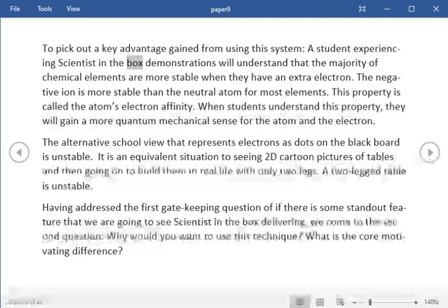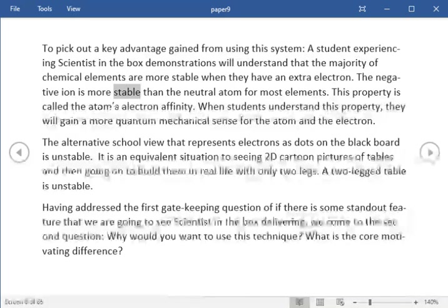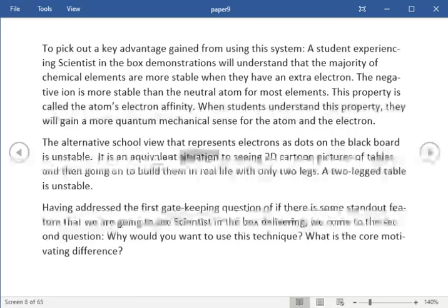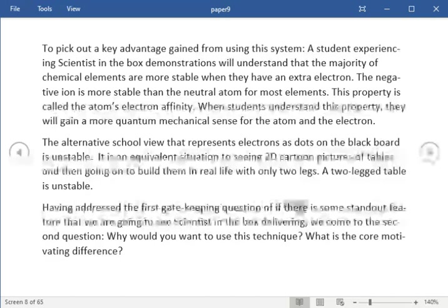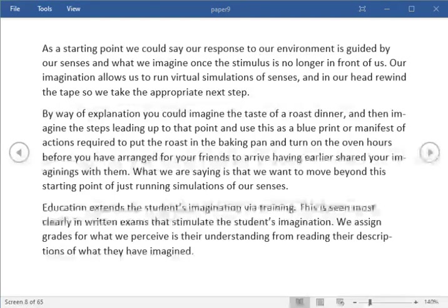To pick out a key advantage gained from using this system, a student experiencing scientist in the box demonstrations, will understand that the majority of chemical elements are more stable when they have an extra electron. The negative ion is more stable than the neutral atom for most elements. This property is called the atom's electron affinity. When students understand this property, they will gain a more quantum mechanical sense for the atom and the electron. The alternative school view that represents electrons as dots on the black board is unstable. It is an equivalent situation to seeing 2D cartoon pictures of tables and then going on to build them in real life with only two legs. A two-legged table is unstable. Having addressed the first gatekeeping question of if there is some standout feature that we are going to see scientist in the box delivering, we come to the second question, why would you want to use this technique? What is the core motivating difference?